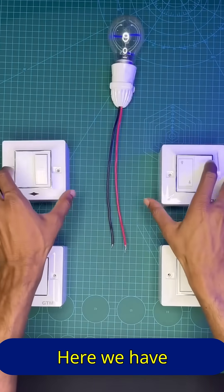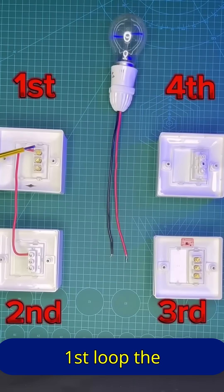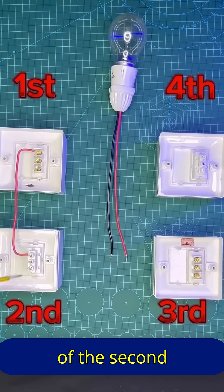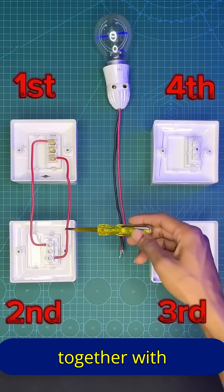Here we have our bulb and four switchboards, each fitted with a two-way switch. For the connection, first loop the upper terminal of the first switch to the upper terminal of the second switch. After that, loop the lower terminals of these two switches together with a wire as well.